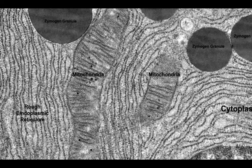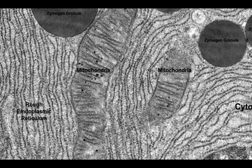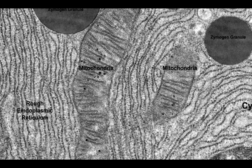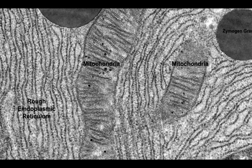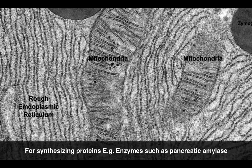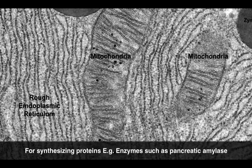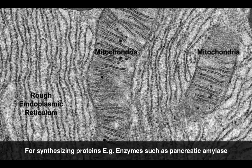Exocrine gland cells of the pancreas are specialized to secrete large quantities of digestive enzymes. These cells have all the organelles you would expect in an animal cell, but also have many more ribosomes and rough endoplasmic reticulum to synthesize proteins such as digestive enzymes, for example pancreatic amylase or pancreatic lipase.